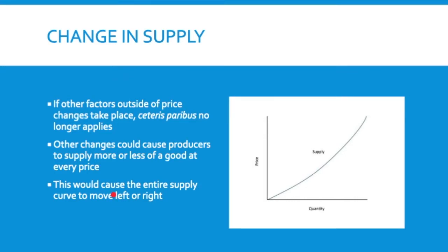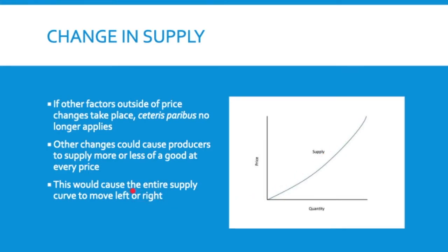Just like with demand, if other factors outside of price take place, then ceteris paribus no longer applies. Ceteris paribus means everything else holds constant. If the only thing changing is price, all we're going to do is move along this curve. If price is $20, I make this many pizzas; if price is $5, I make fewer. That's ceteris paribus. But if other things change, this whole thing could cause the line to move.